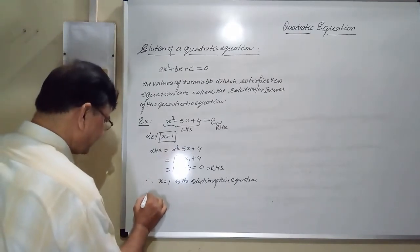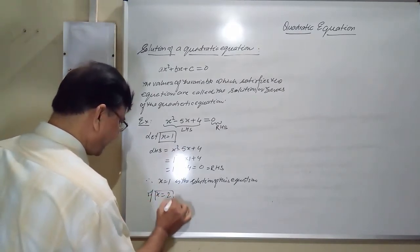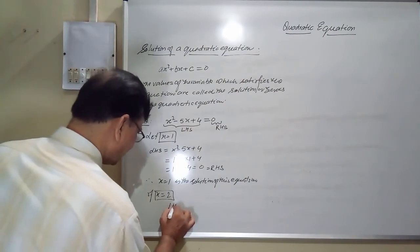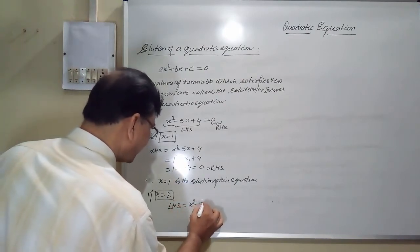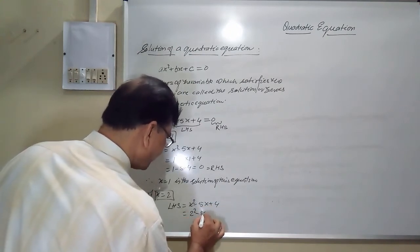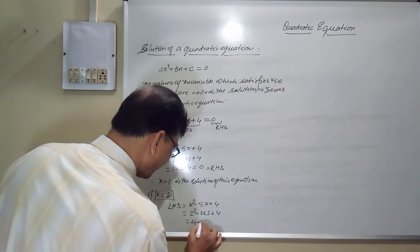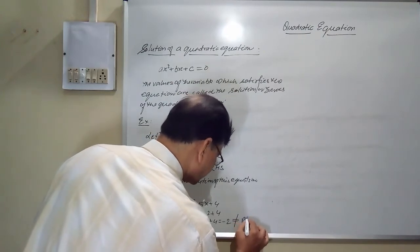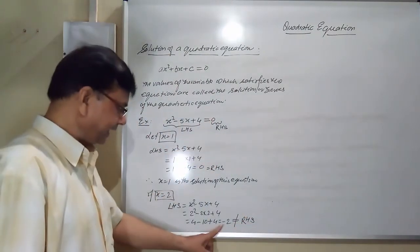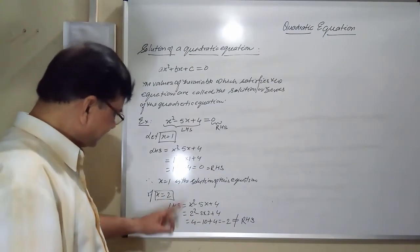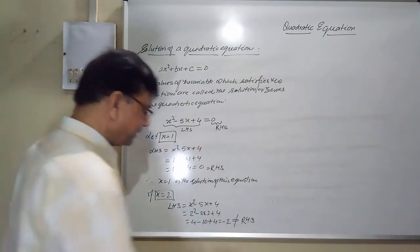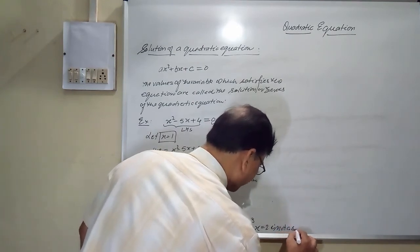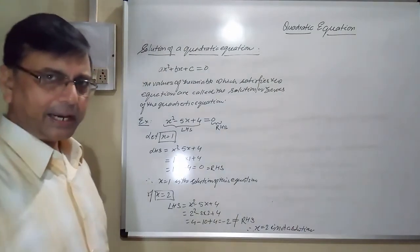Second case: x = 2. LHS = 2² − 5(2) + 4 = 4 − 10 + 4 = −2. This is not equal to RHS, which is 0. So x = 2 does not satisfy the equation. Therefore x = 2 is not a solution.